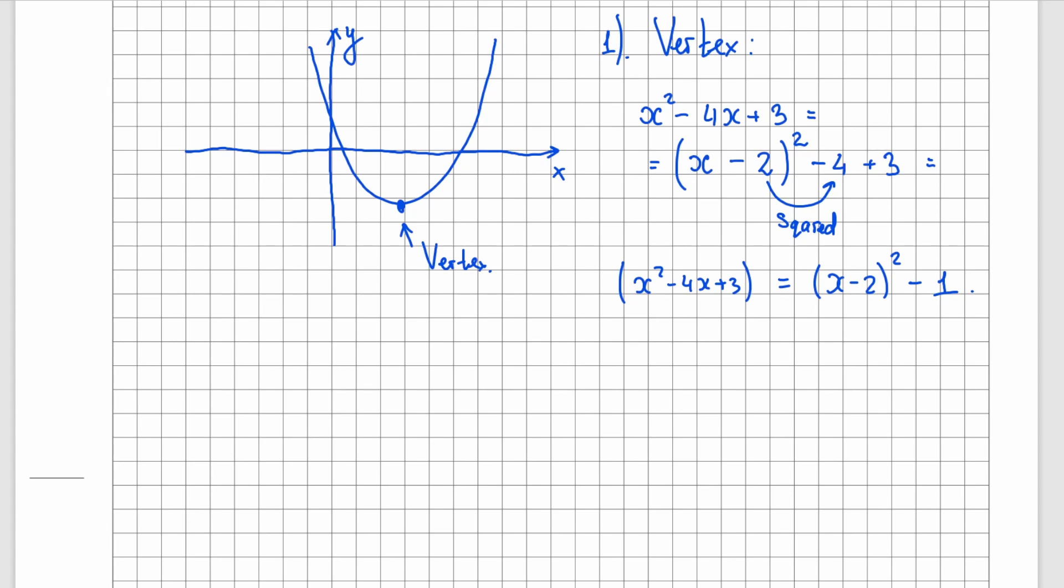Now look at the graph. In this case vertex is the minimum. It is the lowest point on this curve. Look at our expression in the complete squared form. We have x minus 2 squared. Now what is the lowest value that x minus 2 squared can take? Something squared cannot be less than 0. So the lowest value is 0.